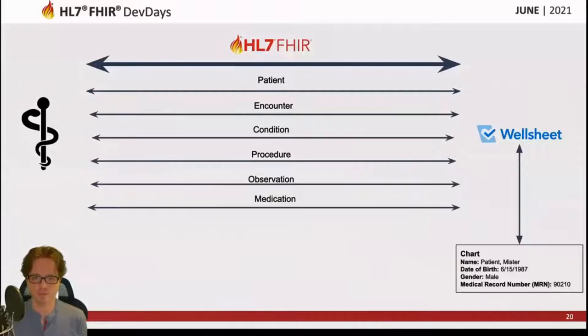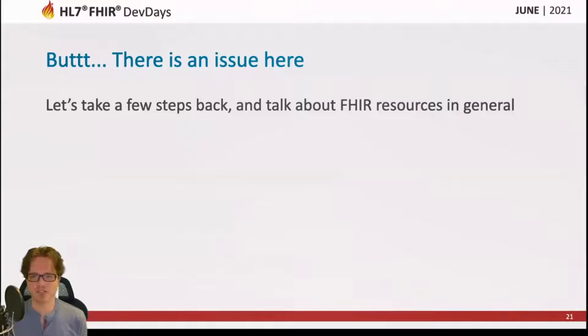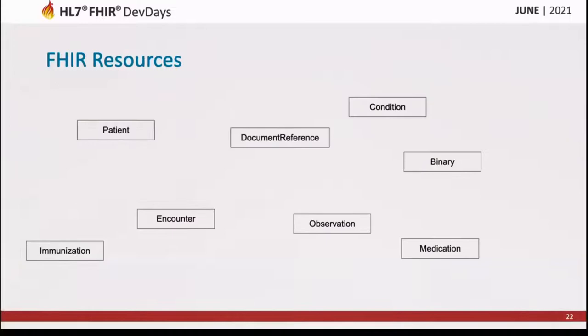We realized we could probably parallelize these fetches and not have to wait on each one to finish before starting the next. But let's take a step back from parallelization for a second and talk about some of these FHIR resources and how they play together. Here's an assortment of different FHIR resources — not all the ones we use, but definitely some of them — and initially they appear unstructured with no clear order.